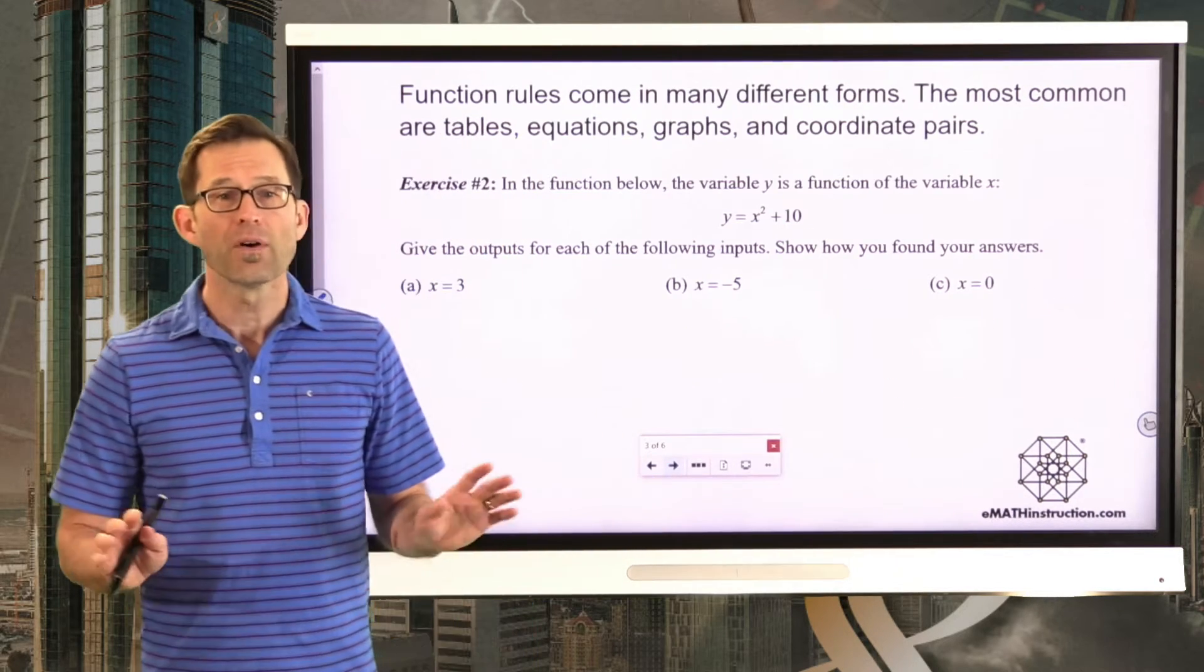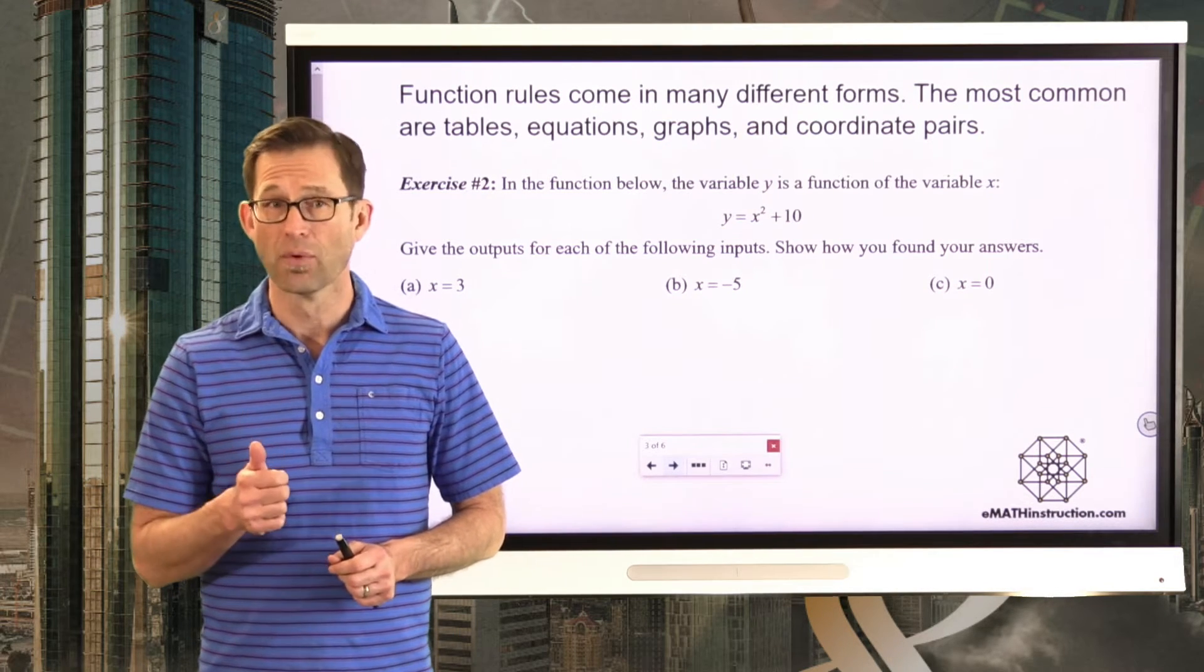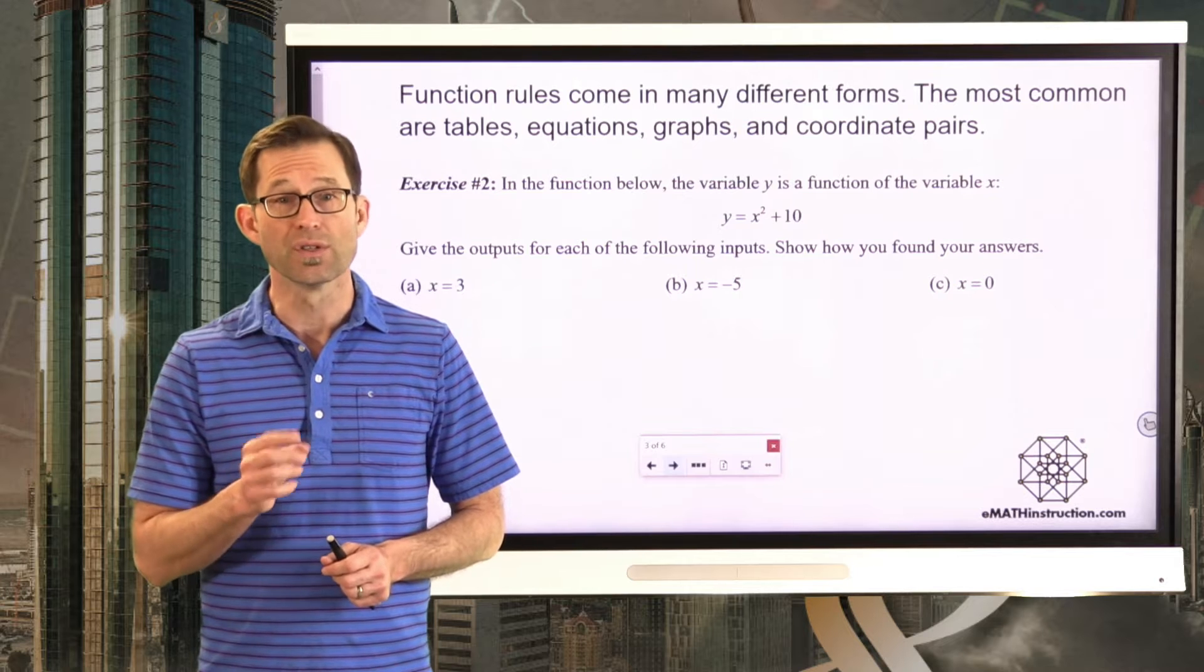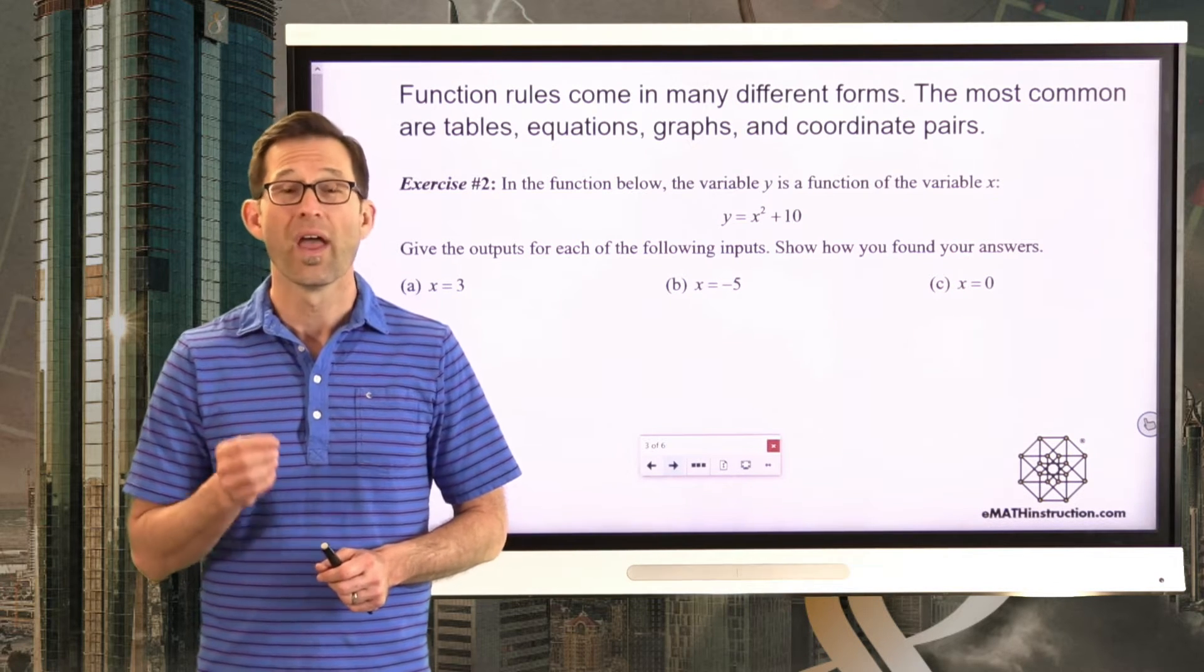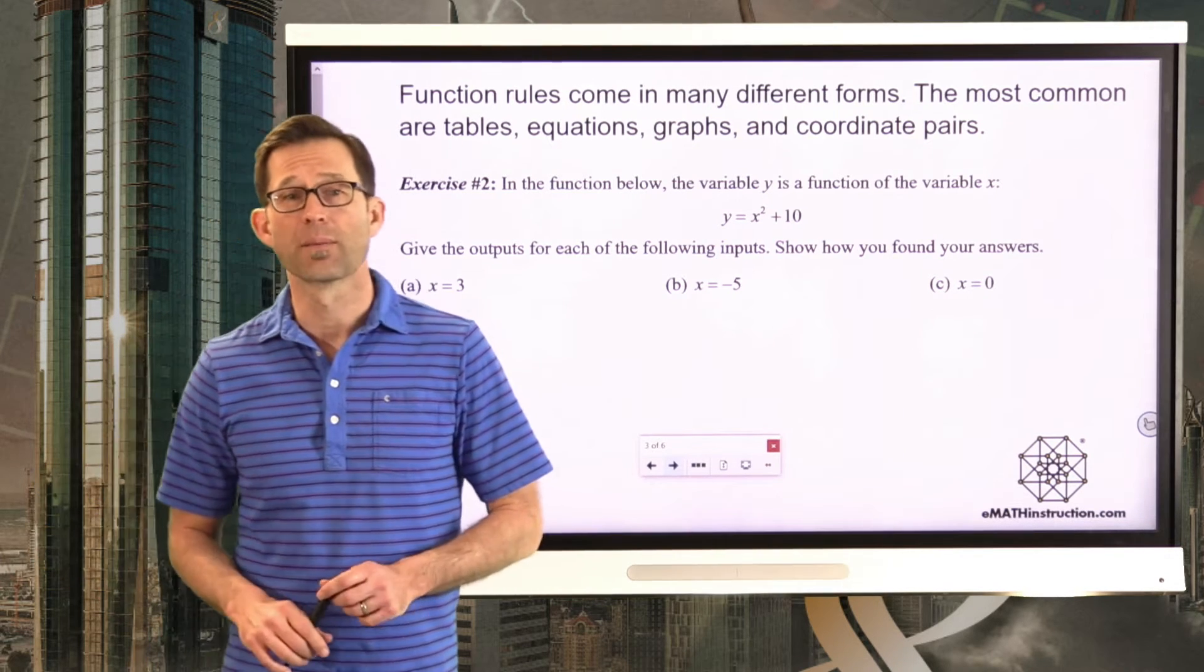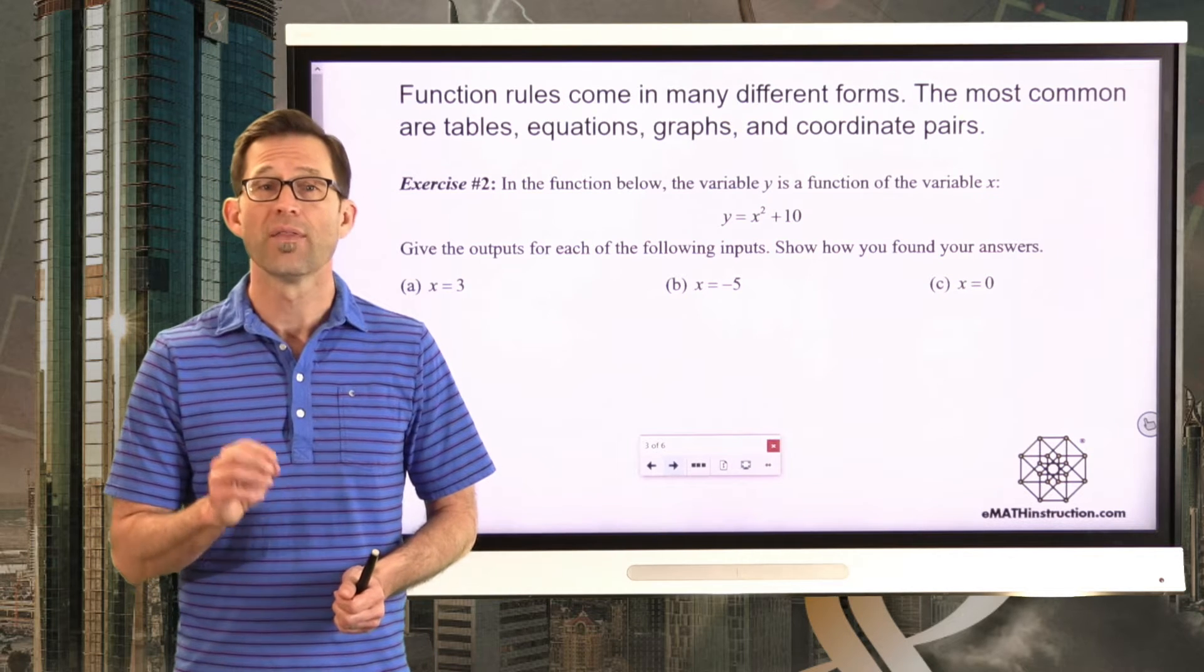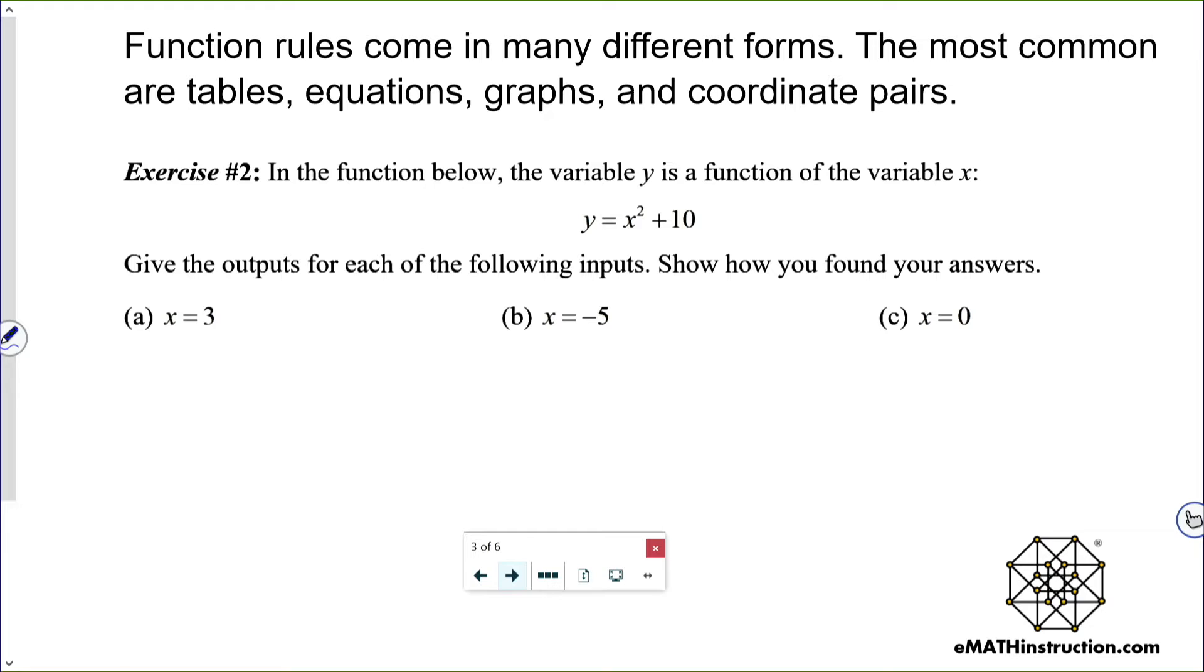Let's continue to work with more types of function rules. Function rules come in many different forms. The most common are tables, which we just saw, equations, which we're going to work with next, graphs, which we're going to get to, and coordinate pairs. We're going to get to those as well. Let's take a look at exercise number two, where we deal with a function that's given in an equation form.